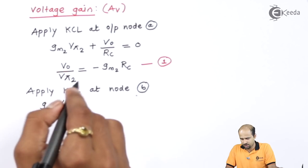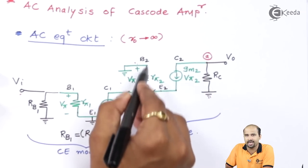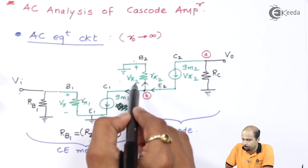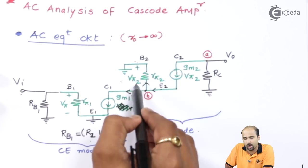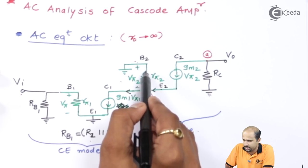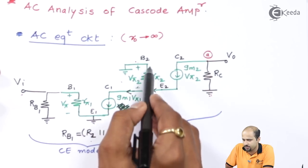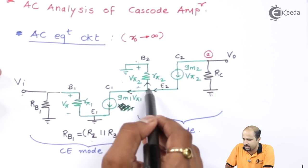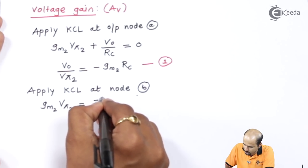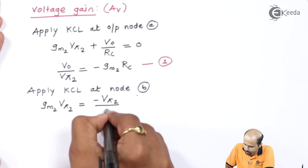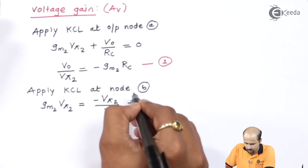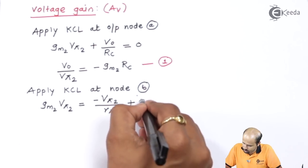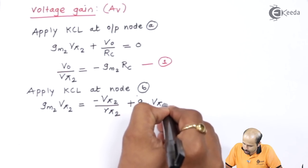Applying KCL at node B: gm2·vπ2 is equal to the current flowing through rπ2. The current through rπ2 is minus vπ2 divided by rπ2 — the sign is negative because the vπ2 polarity convention has current flowing from base to emitter, but here current flows from emitter to base. So it equals minus vπ2/rπ2.